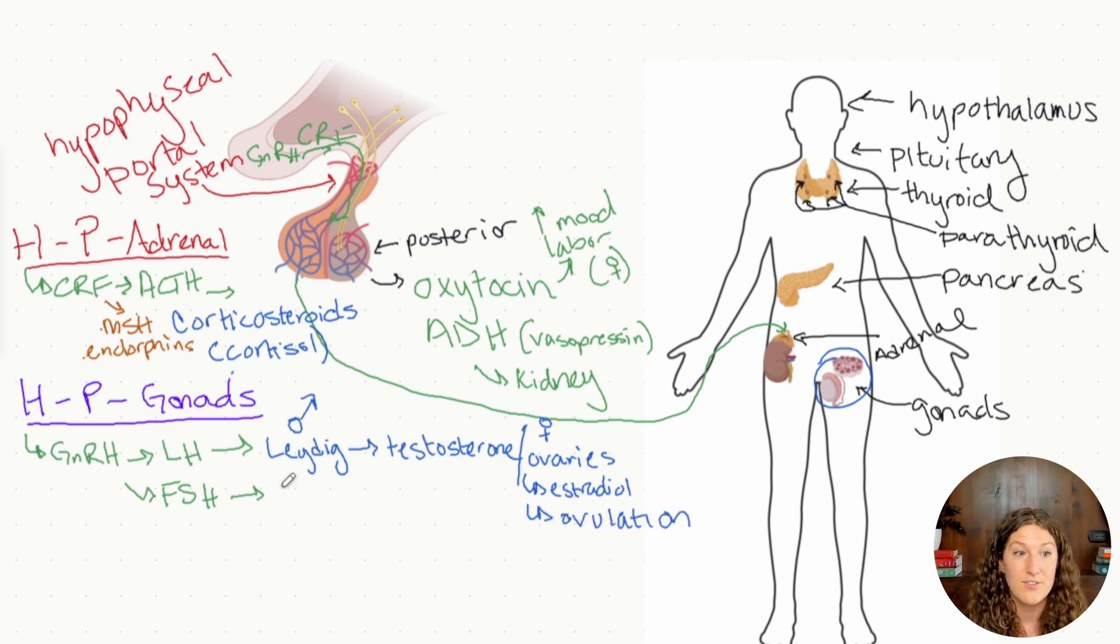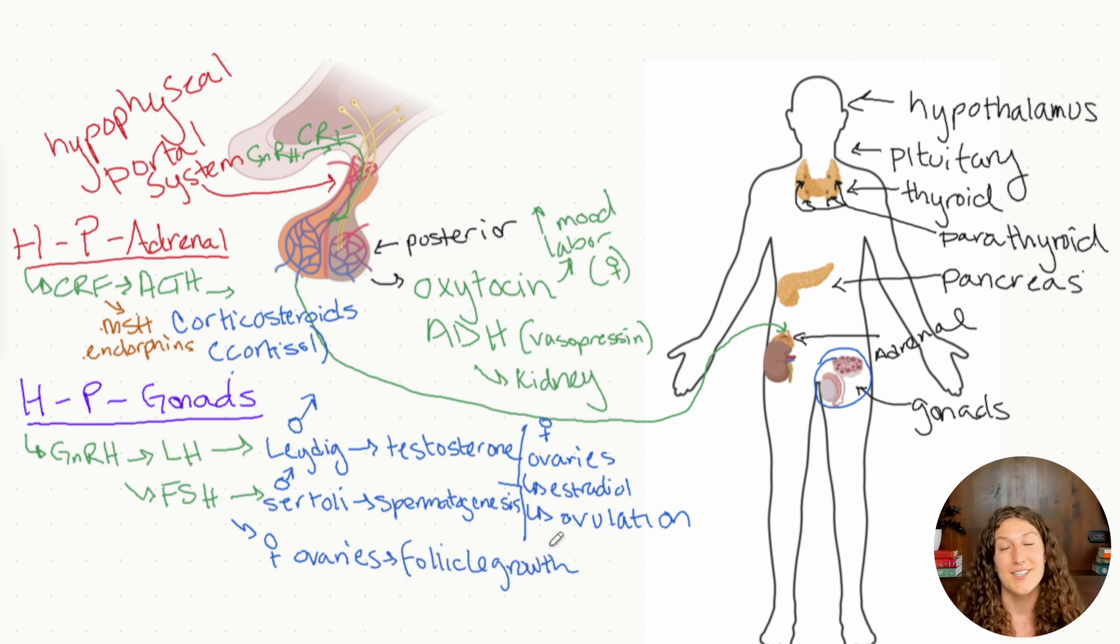In males, FSH, follicle stimulating hormone, stimulates the Sertoli cells, which results in spermatogenesis or making of more sperm cells. In females, FSH stimulates the follicles of the ovaries, resulting in follicle growth. One of those follicles will eventually become the egg that will travel down the fallopian tubes. As the follicles grow, they also produce estradiol.